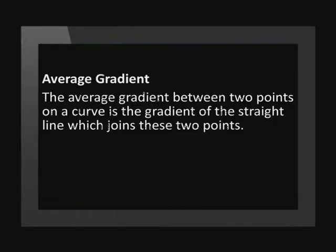The average gradient between two points on a curve is the gradient of the straight line which joins these two points. It has the formula m equals y2 minus y1 over x2 minus x1. The average gradient is the same as the average rate of change. Let's do an example.